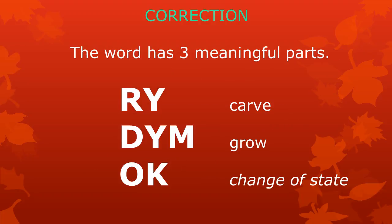A friend told me that this word has not two, but three meaningful parts. One of them we had already identified — it was 'ok'. But 'redem' also has two meaningful parts, namely 're', meaning 'carve' in English, and 'dem', meaning 'grow' in English.